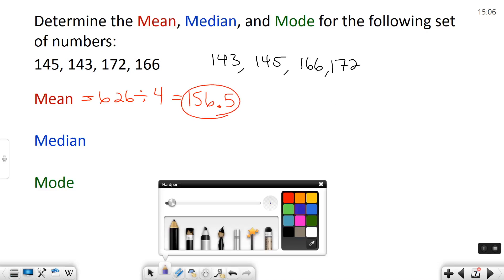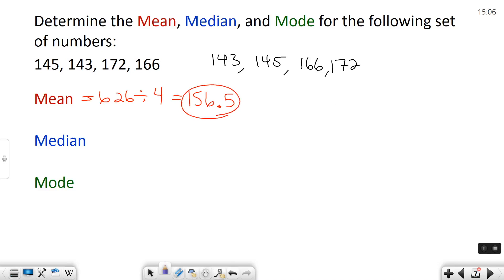Now let's look at the median, the middle number in our data set. Well in this one there are two middle numbers, 145 and 166. So I got to find the average of those two numbers. To find the average I need to add them up and divide by two. So if I add these two up I'm going to get 311, which you can verify on a calculator if you needed to, and I'm going to divide by two.